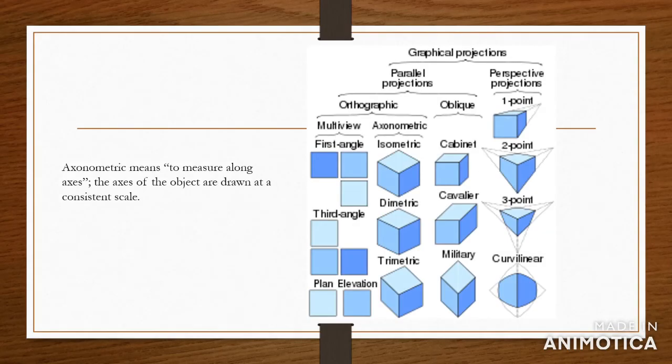This might be the first time you're hearing of an axonometric drawing or axonometric projection. Axonometric means to measure along axes. So if you have an XYZ axis — those are for 3D drawings — you're measuring along the axis or you are drawing along the axis.